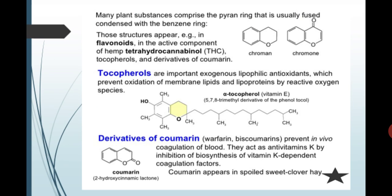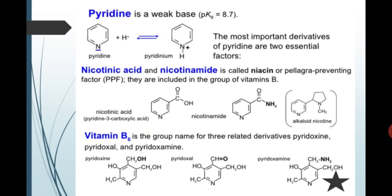Many plant substances comprise the pyran ring that usually fused or condensed with the benzene ring. The structure appears for example in the flavonoids and also tocopherols are important as antitoxidants. Derivatives of coumarin is vitamin K dependent factors.